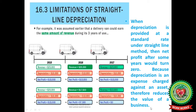Now, limitations of the straight line method. This method is quite simple — you apply the same rate and same amount of depreciation every year. For example, it was assumed that a delivery van could earn the same amount of revenue during its three years of use. When depreciation is provided at a standard rate under straight line method, net profit after some years would turn zero, because depreciation is an expense charged against an asset and therefore reduces the value of a business.